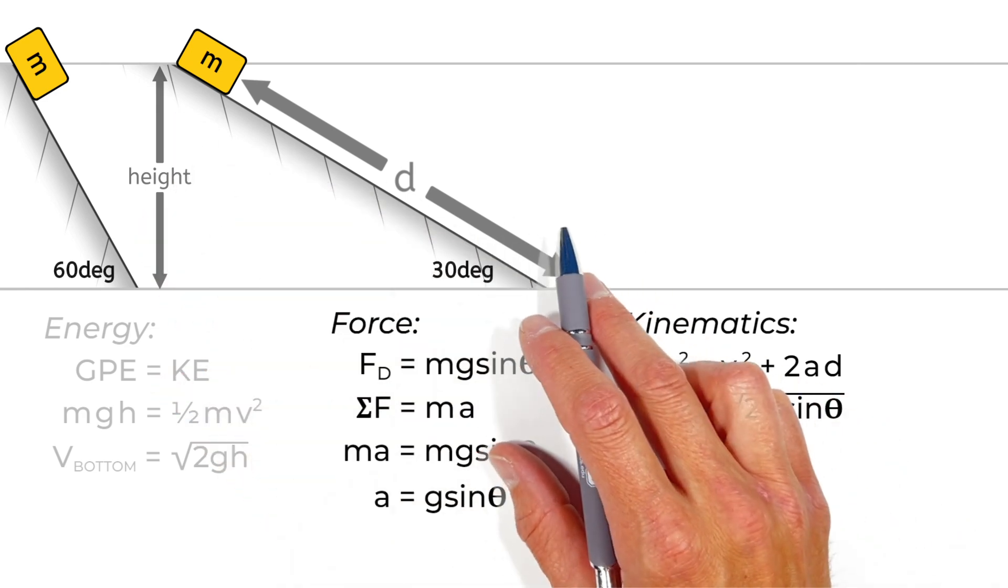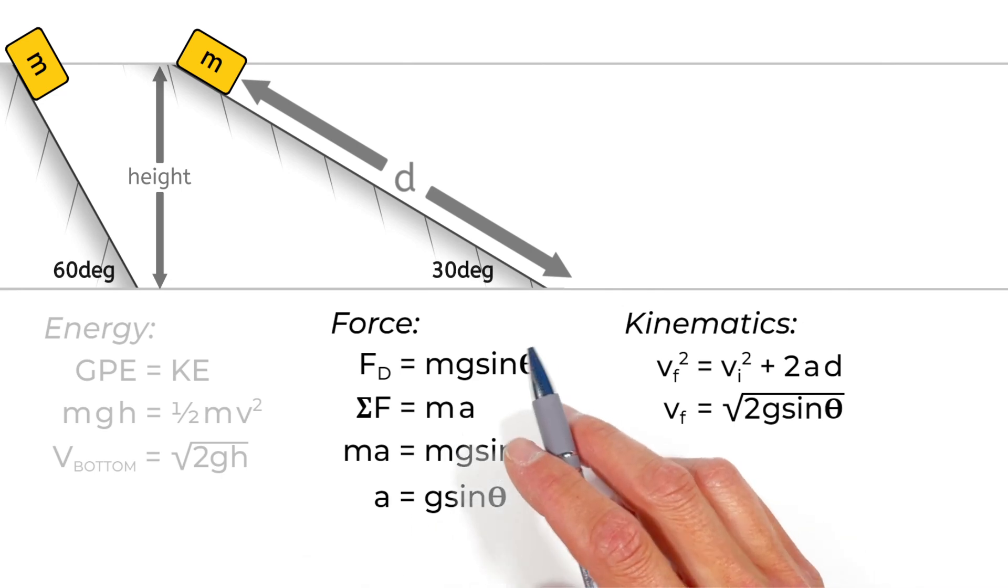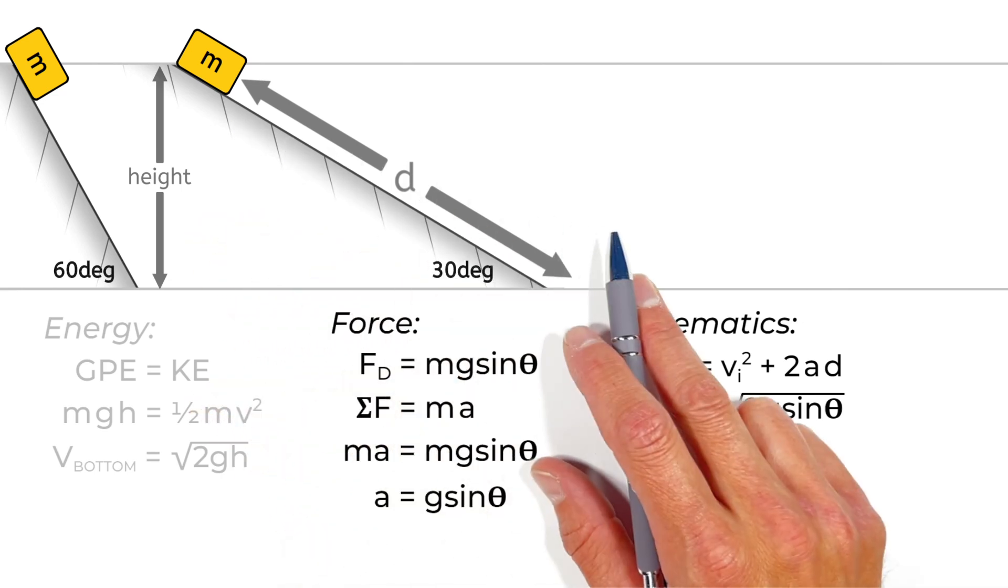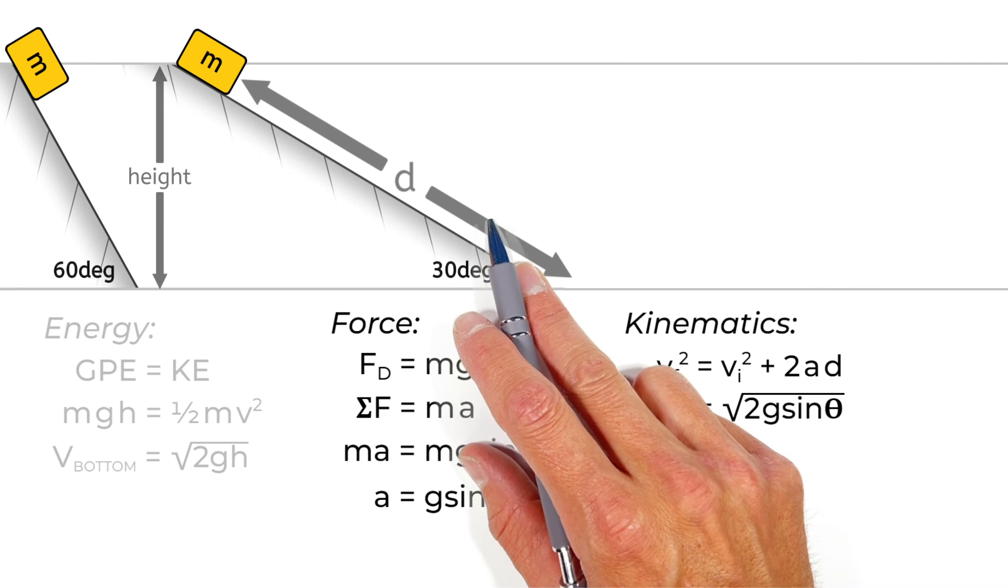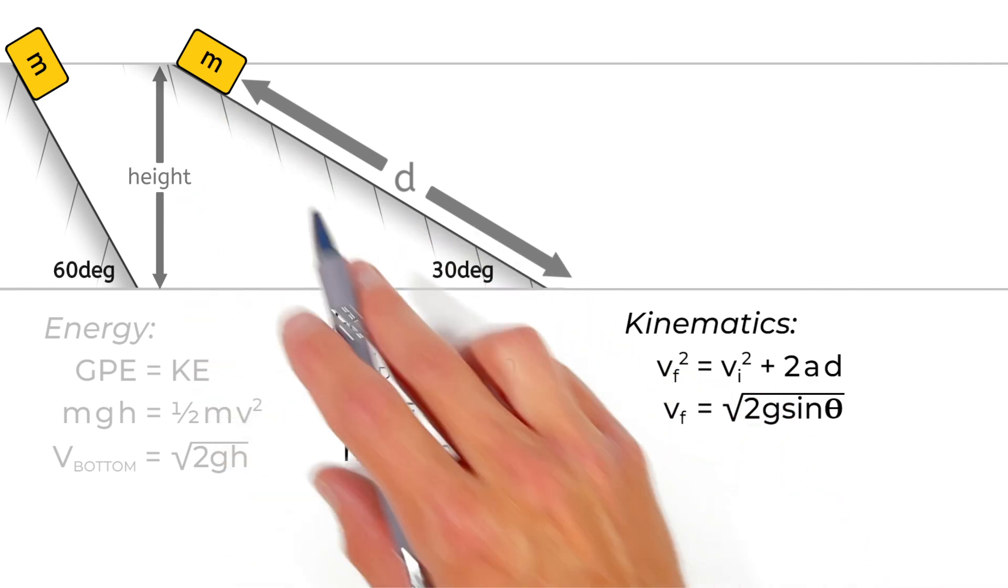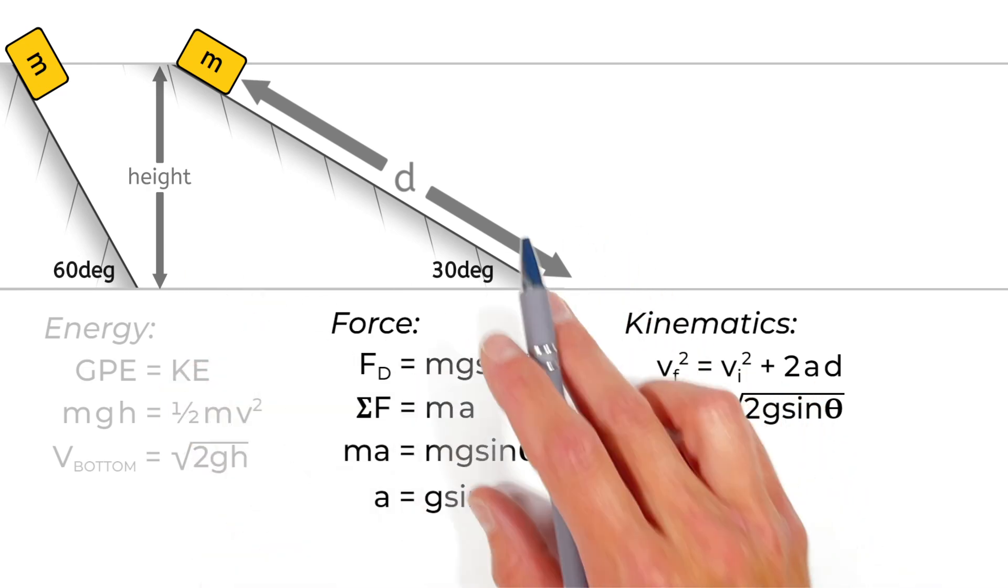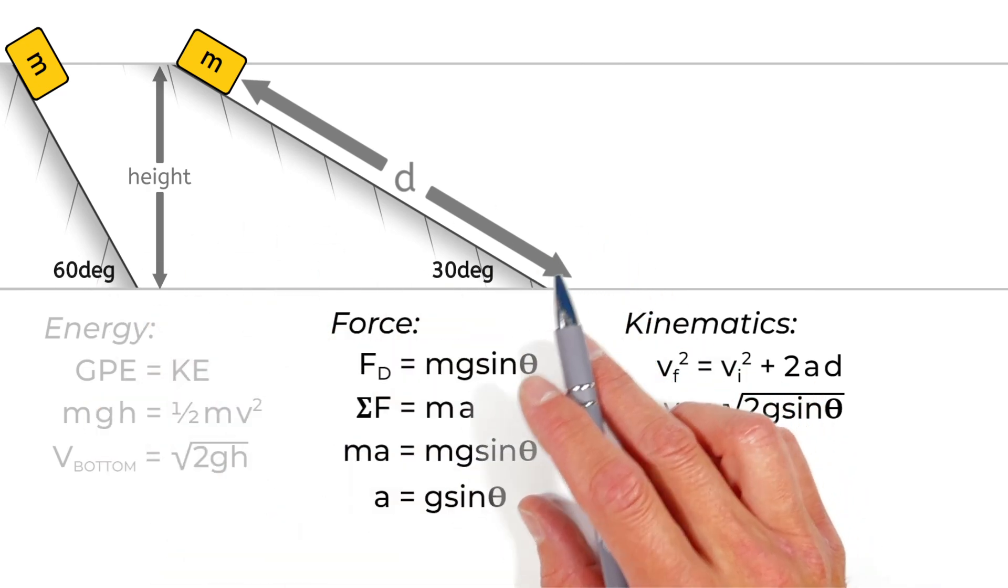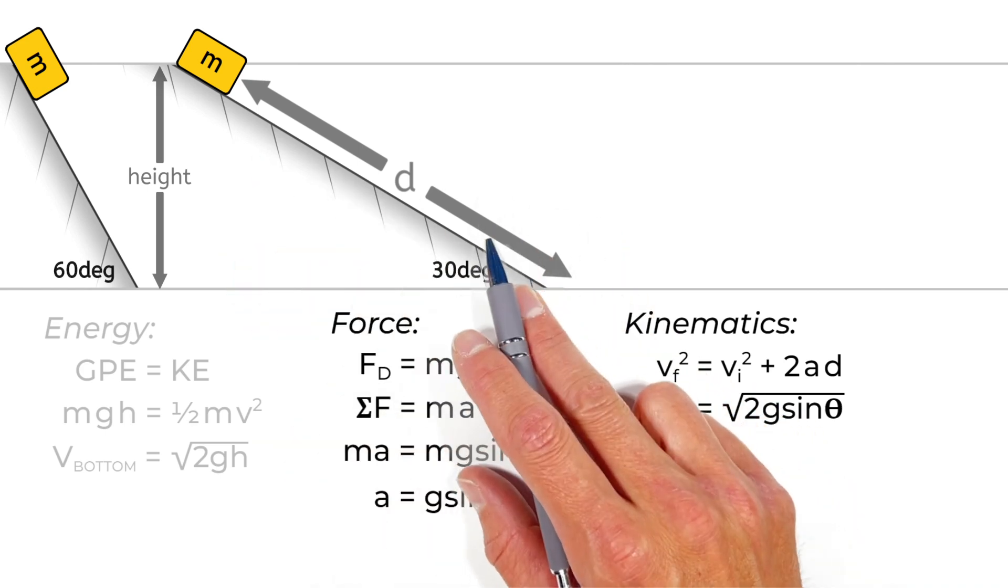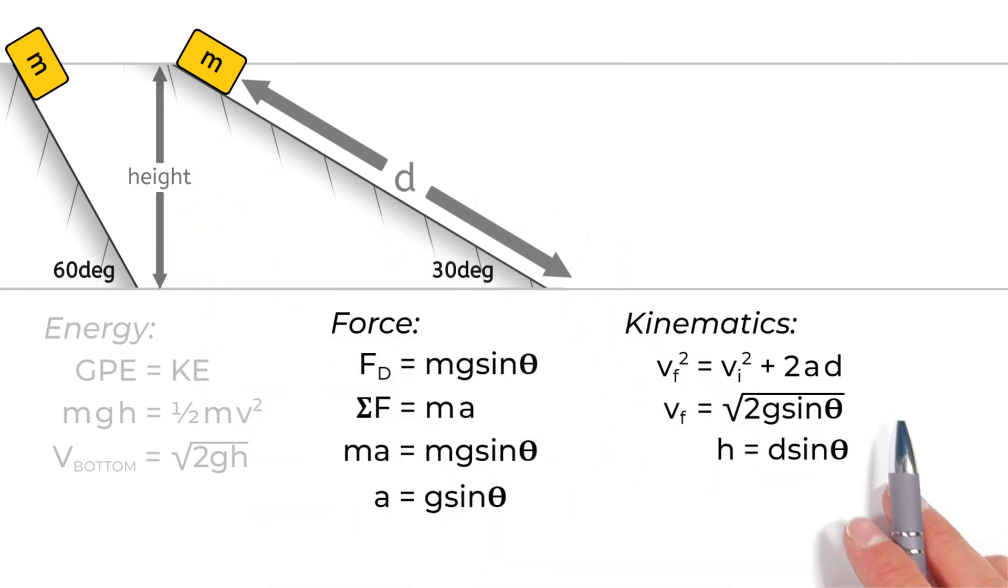And there's an important thing to recognize here. The length of this hill and the angle of this hill have a relationship. If we were to take this value d and multiply it by the sine of theta, it's going to give us the height of the hill. And what you'll notice with both this long hill as well as this steep hill is that regardless of how long the hill is, this value d sine theta is always going to be h. And so, we get this relationship that h is equal to d sine theta.